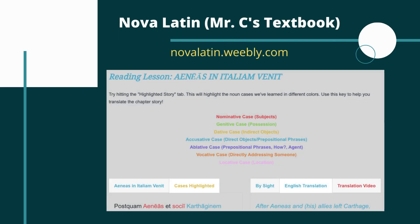Hey everyone, in this video we're going to take a look at the second story from chapter 30 of the Road to Latin textbook. This story is called 'Aeneas in Italy.' We're going to be continuing the story of Aeneas now that he's been to Carthage, been with and left Queen Dido, and we're going to get to his arrival in Italy and continue the summary of the Aeneid.